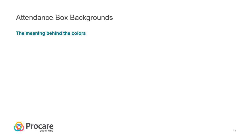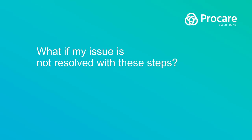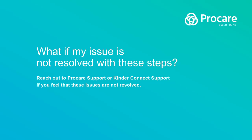When troubleshooting syncing issues, you may also see different colors highlighting the boxes on the KinderConnect website — a full list of the meanings behind the attendance box background colors is included. If your issue is not resolved by these steps, reach out to ProCare Support if you feel the ProCare Extra is not syncing correctly. If you have questions regarding a child's eligibility, contact KinderConnect.